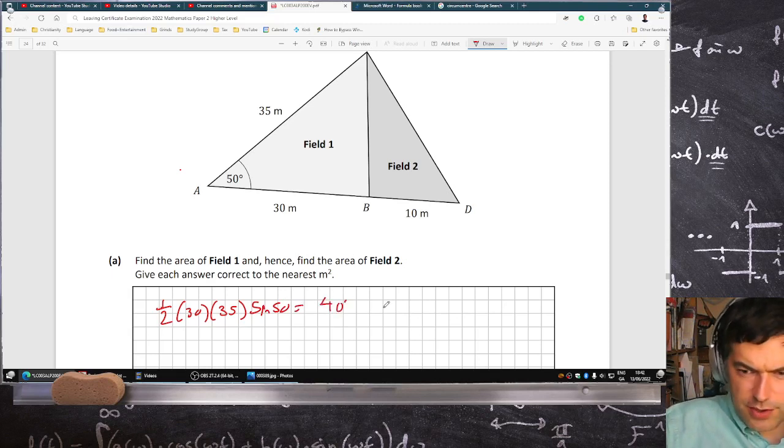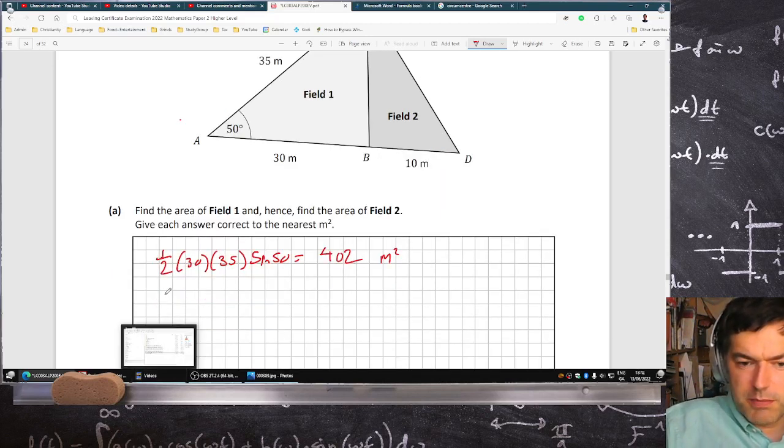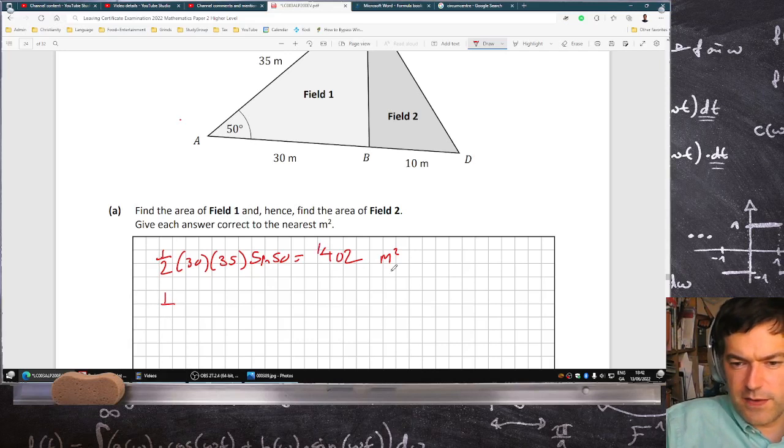So that's the formula: one-half times 30 times 35 times sine 50. That's 402 meters squared. So that's the first answer for field one.